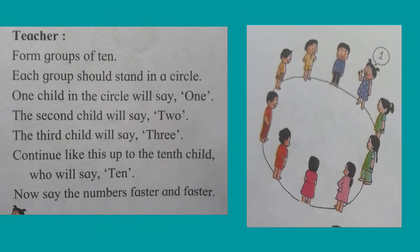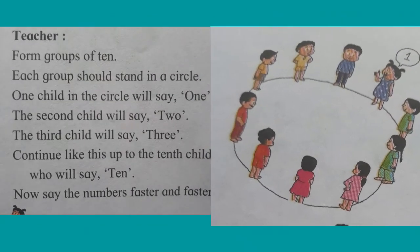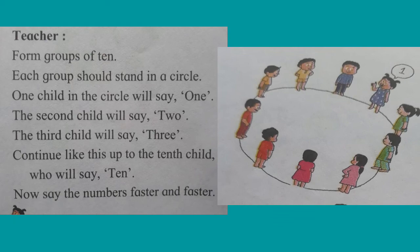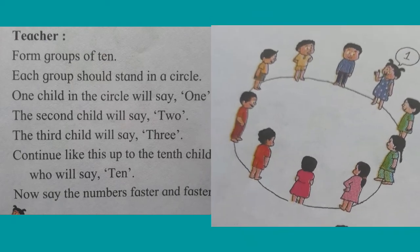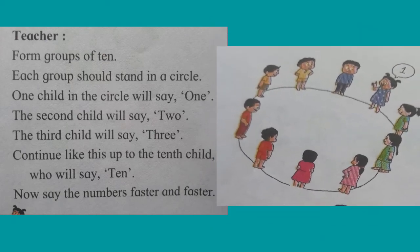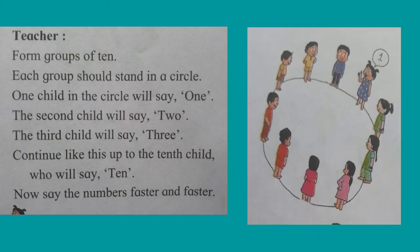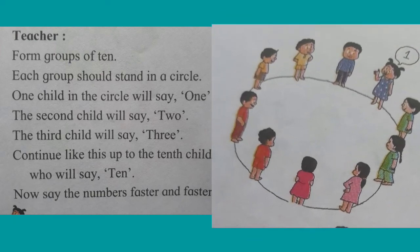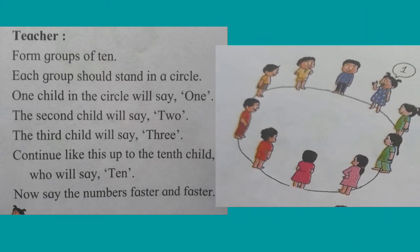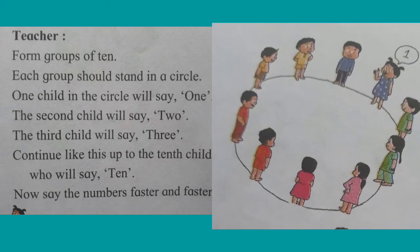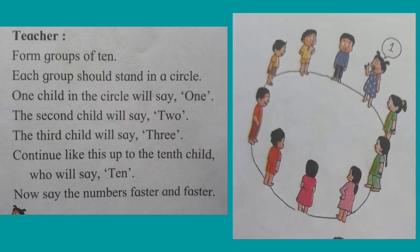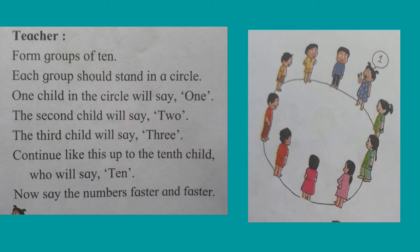The teacher says: form a group of 10, meaning 10 students. Each group should stand in a circle. One child in the circle will say 1, the second will say 2, the third child will say 3. Continue like this up to the 10th child, who will say 10.